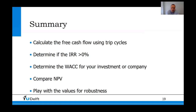In summary: calculate the free cash flow using trip cycles; determine if the IRR is above 0%; determine the WACC for your investment or company and compare the IRR to it; if still choosing between multiple options, create the NPV calculation and pick the one with the highest net present value. Finally, before picking, perform sensitivity analysis on all uncertain values and be aware of how uncertainty might affect your actual profit. Thank you for your attention.